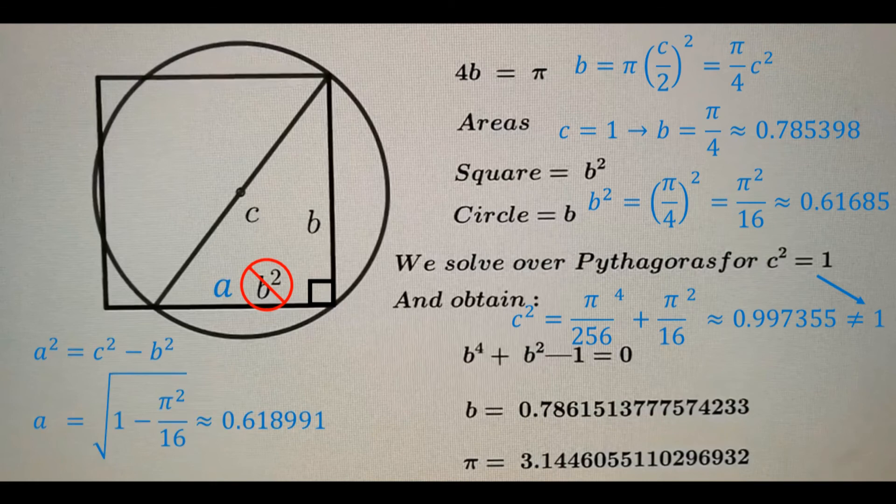To find the length of the bottom rung of the inscribed triangle, you start with a squared equals c squared minus b squared. That gives you a equals the square root of the quantity 1 minus pi squared over 16, which is close to b squared, but not close enough to say they are the same value.